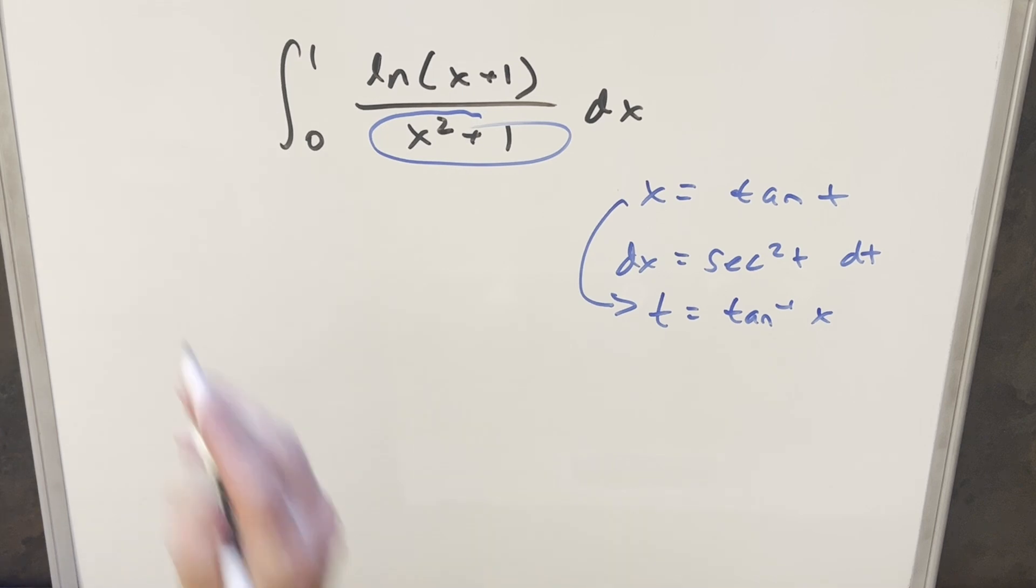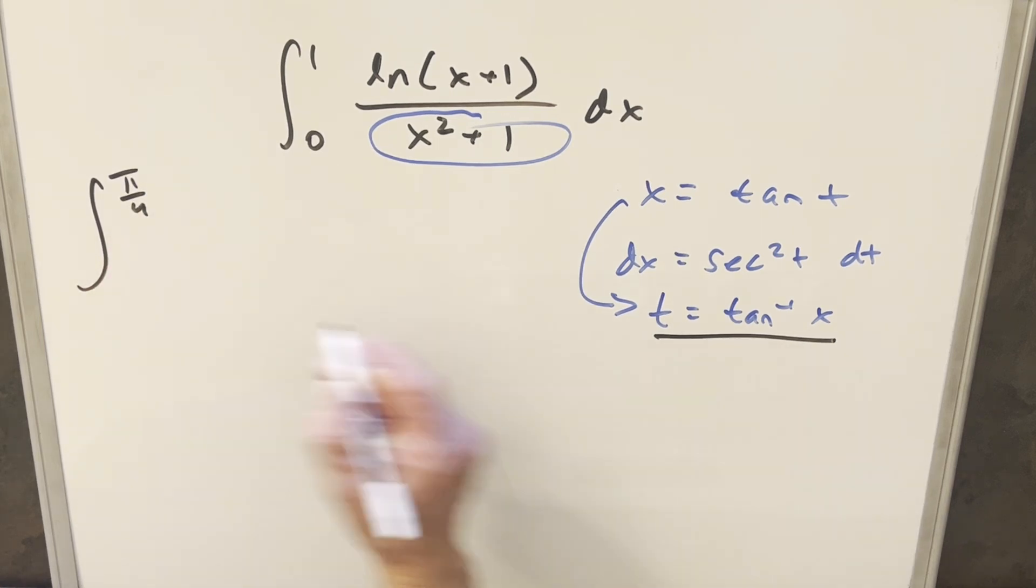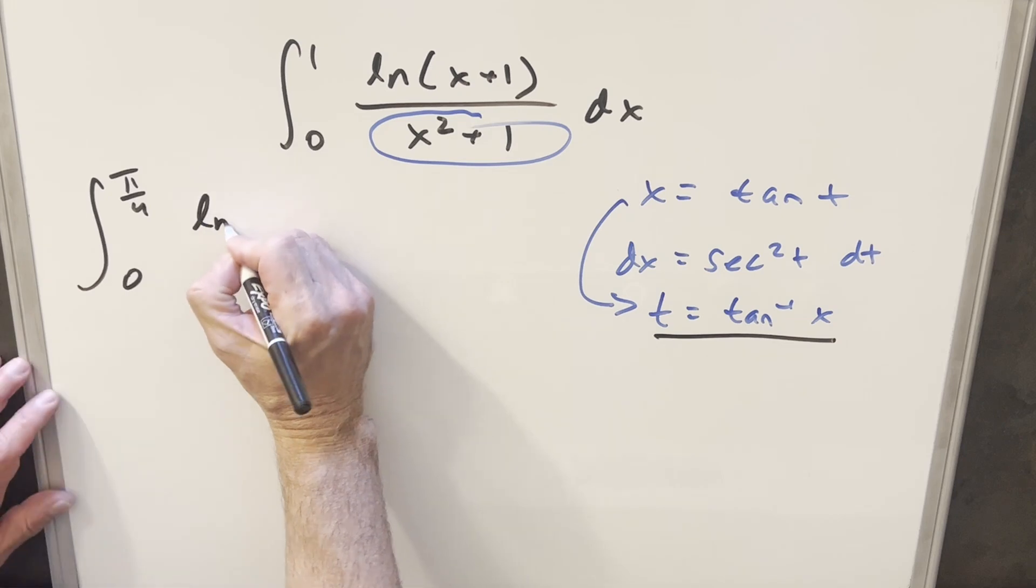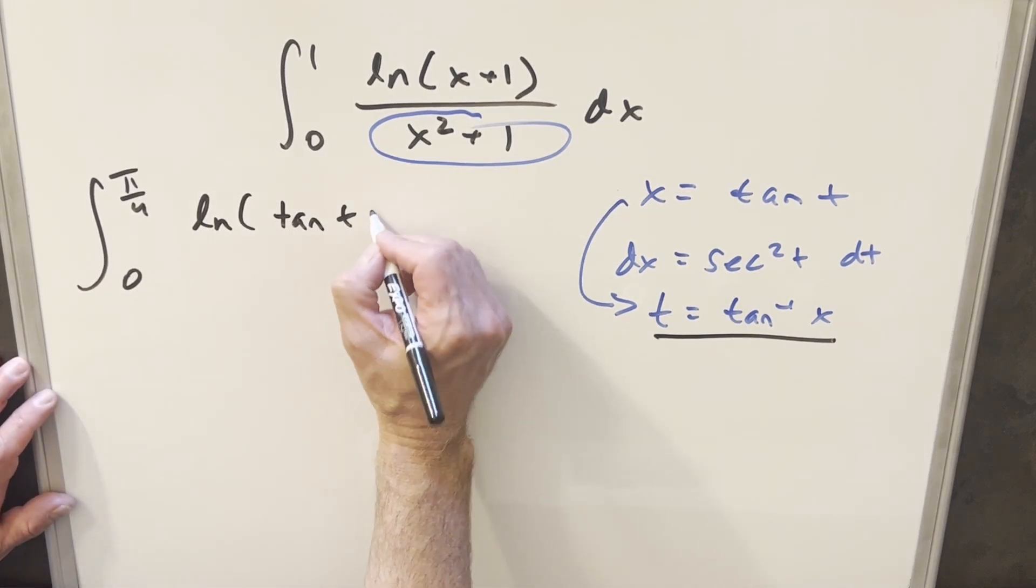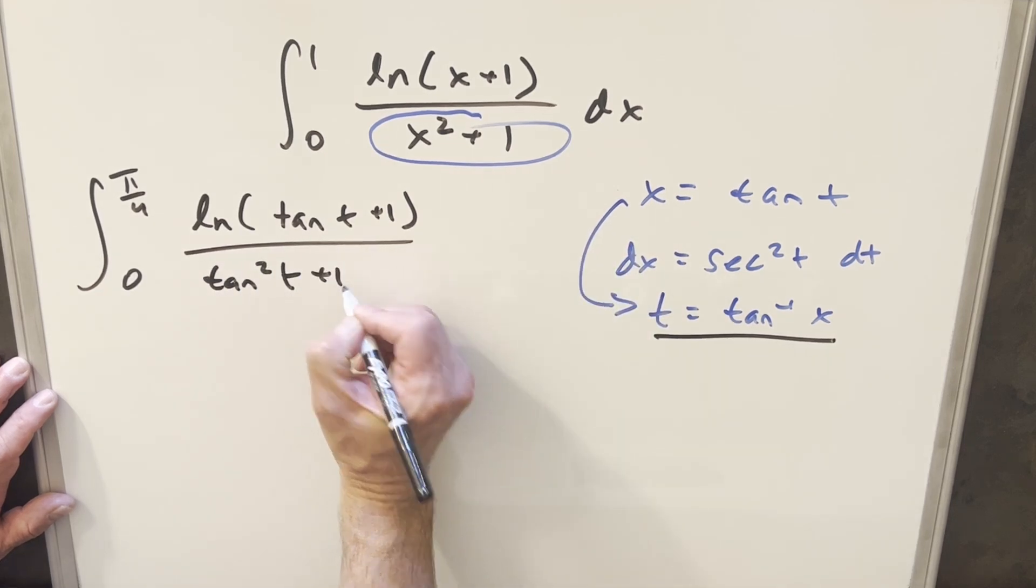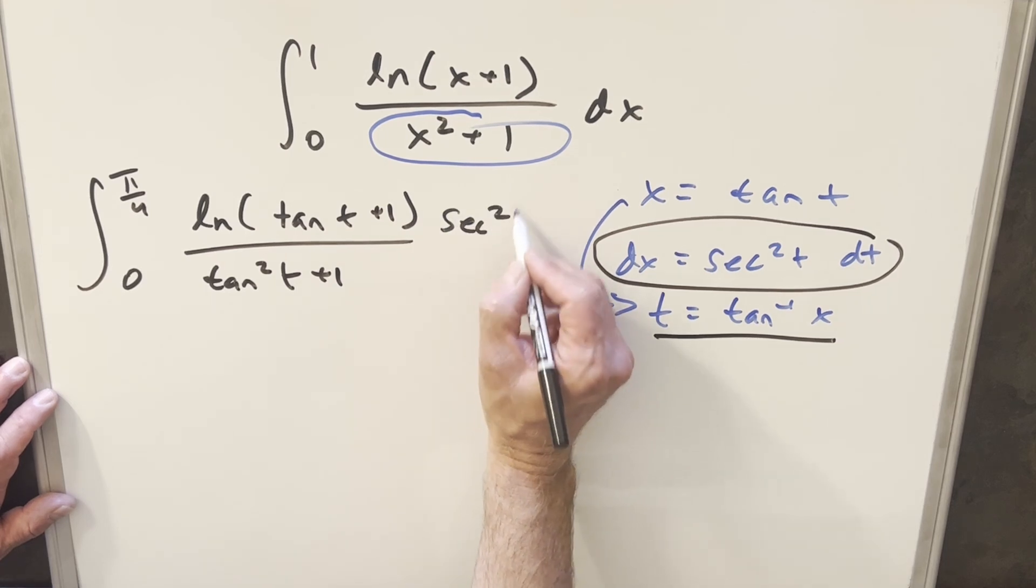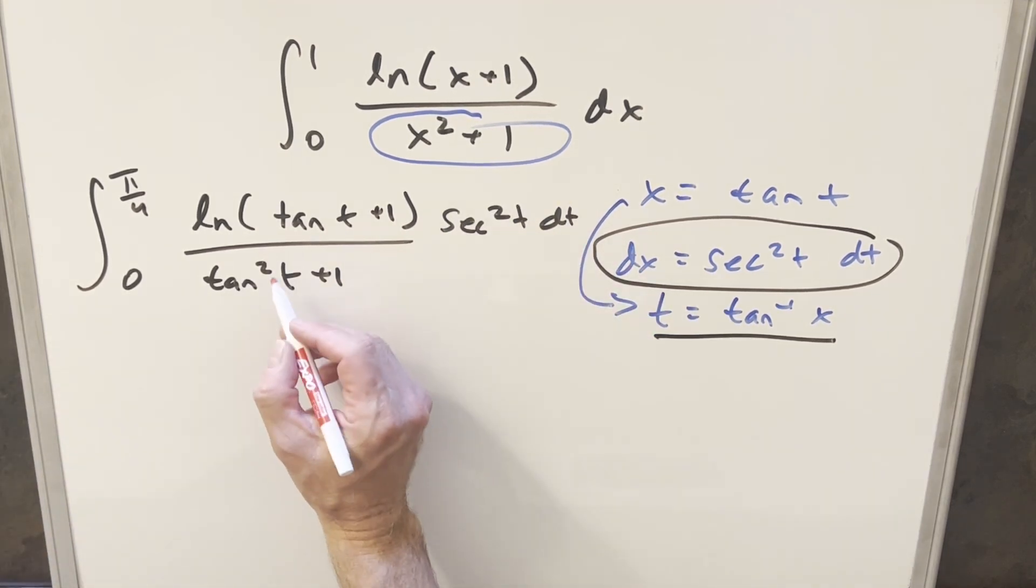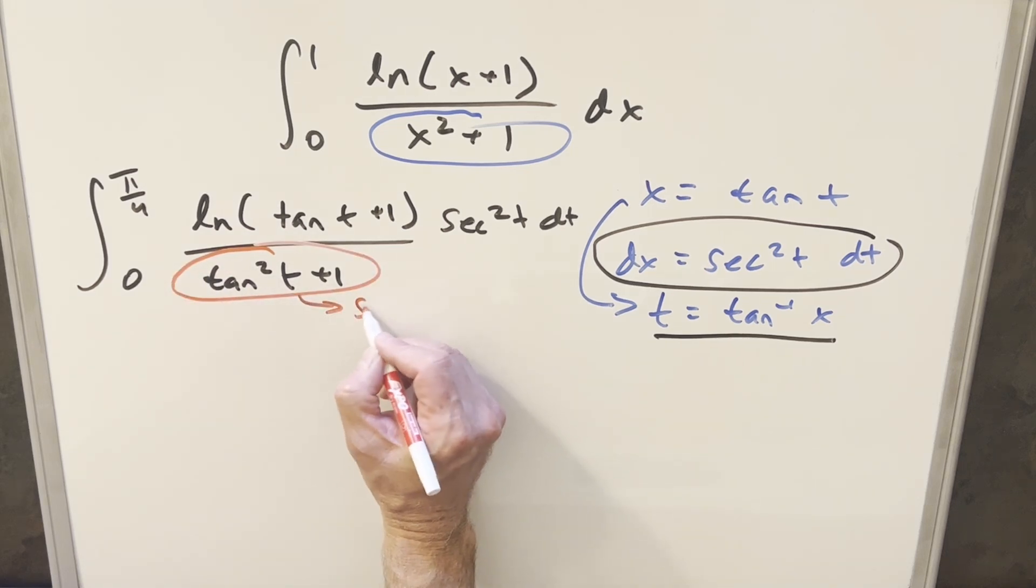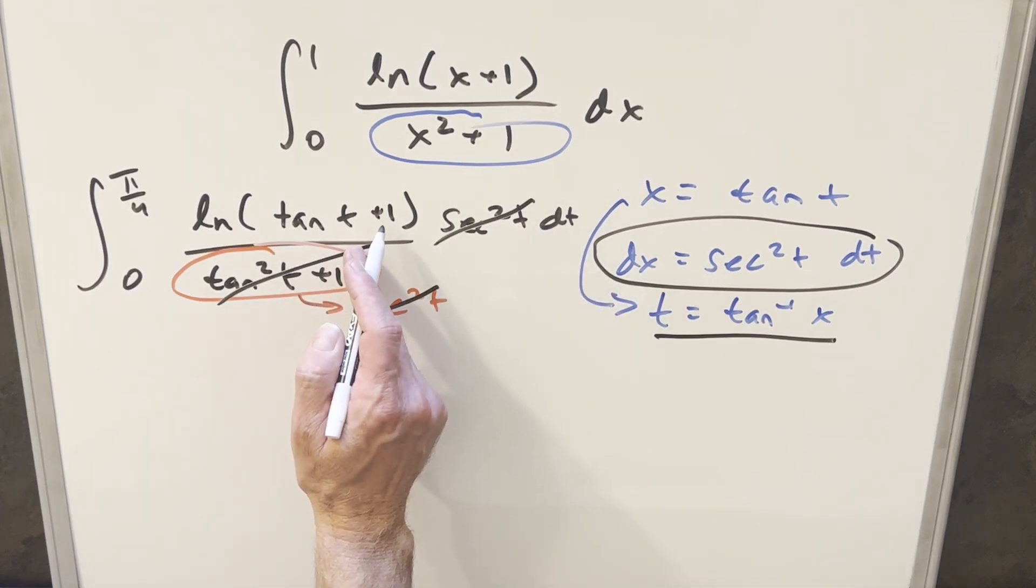Let's go ahead and substitute. First, taking one, we'll plug in one here, arc tan at one is just pi over four, then zero arc tan at zero is just zero. Then the numerator becomes ln tan t plus one and dx becomes secant squared t dt. But for the denominator we have the identity that x squared plus one equals secant squared t, so we get cancellation. That's going to clean this up.